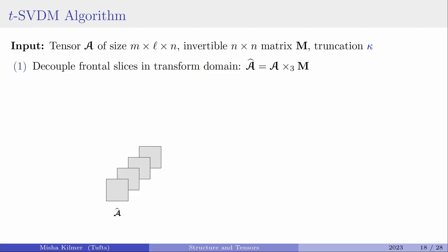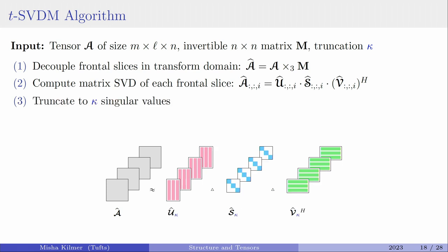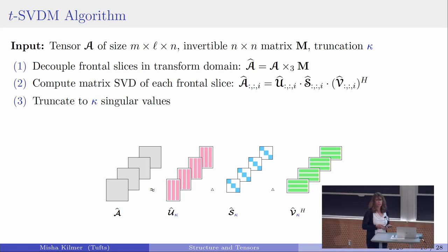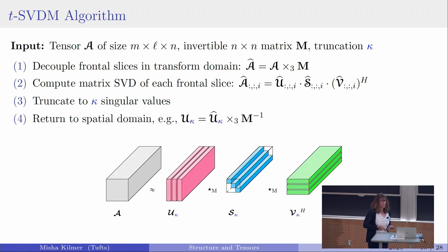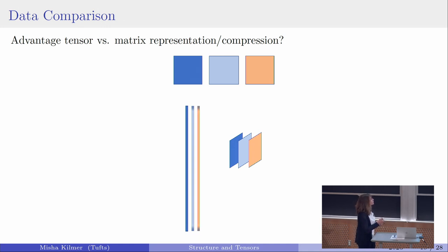We can obtain an Eckart-Young theorem for this tensor: if I want to approximate to kappa terms by truncating the expression, that truncation is optimal over all such approximations in the Frobenius norm. It's straightforward to write the code — I take my tensor A, transform it, do individual SVDs in the transform domain, truncate, then inverse transform. Everything decouples, making it perfectly parallelizable and efficient.